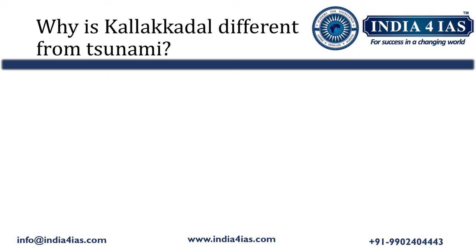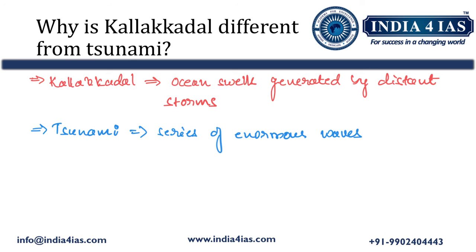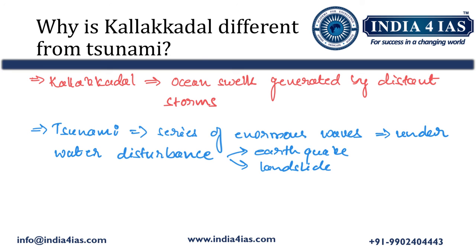Kallak Kadal swell waves are often mistaken for a tsunami due to their impact on coastal areas. However, there is a difference: Kallak Kadal swell waves are caused by ocean swells generated by distant storms, whereas a tsunami is a series of enormous waves caused by underwater disturbances — typically either an earthquake or underwater landslides. This is the key difference between Kallak Kadal ocean swell waves and tsunami waves.